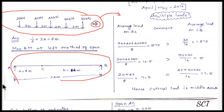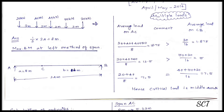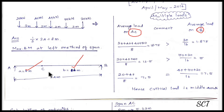We have a simply supported beam. Point C is at one-third of the span. The span AC length is 8 meters and span CB length is 16 meters.